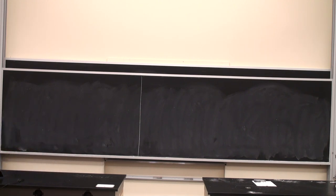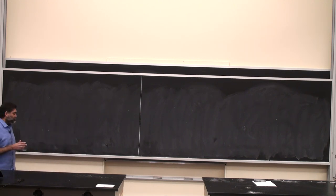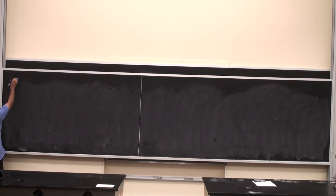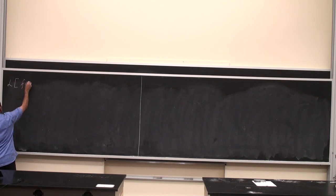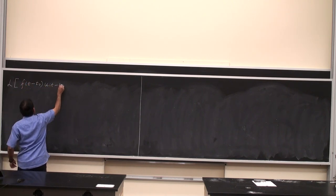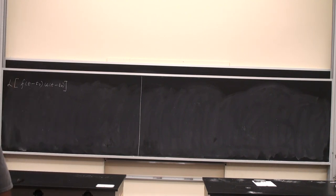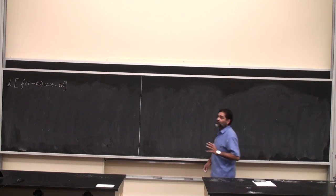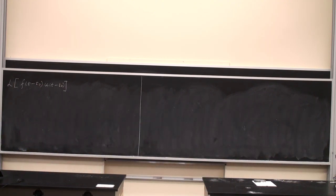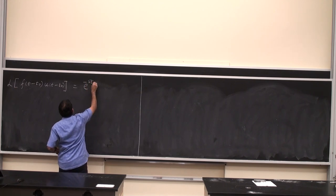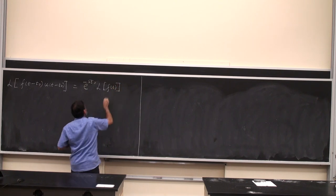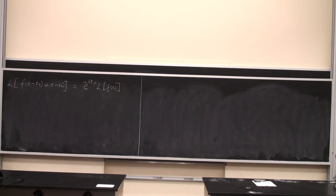I'm not going to derive anything. For the Laplace of a time-shifted function, u(t − t₀) says the function starts after time t = t₀. This is nothing but e^(−s·t₀) multiplied by the Laplace of the actual function itself. This is formula one, and it was posted on Carmen.